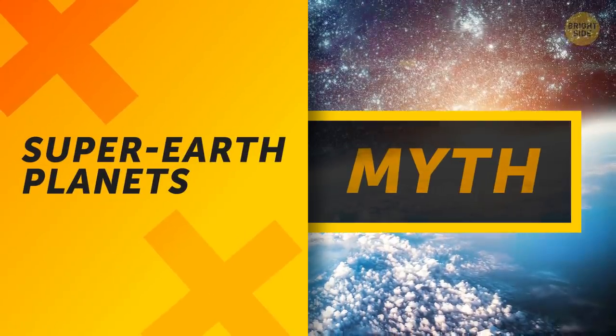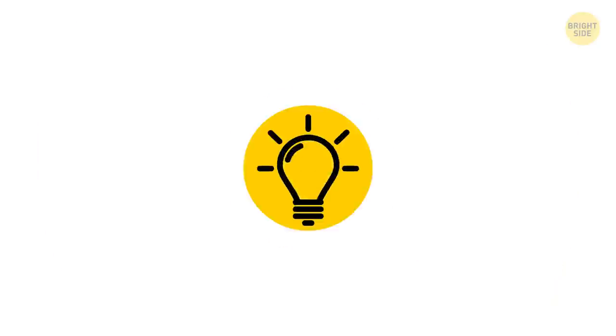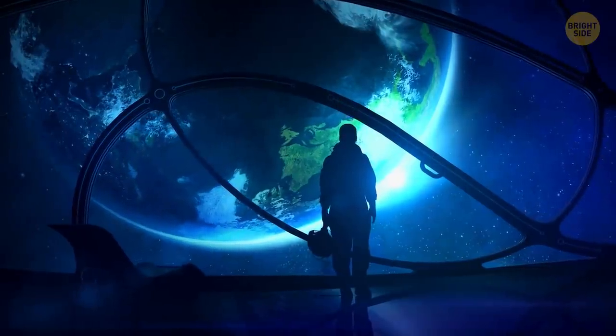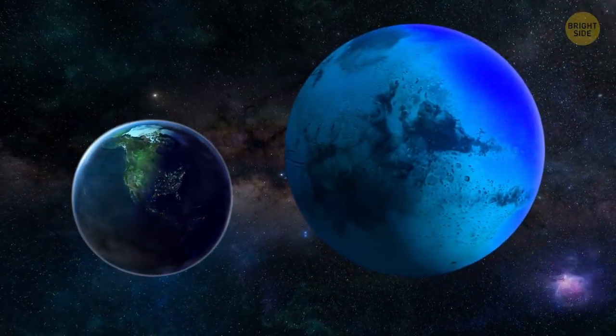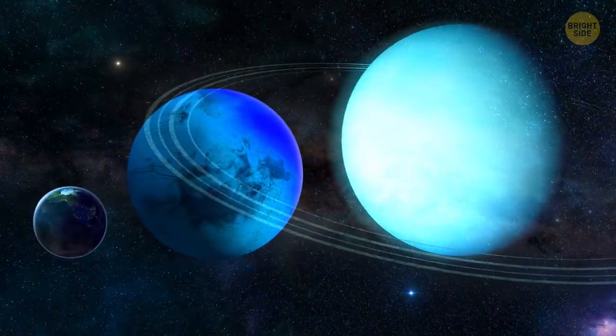Super-Earth planets are like the Earth, but bigger. This term only describes the size. These planets are bigger than the Earth, but not as big as, let's say, Uranus or Saturn.